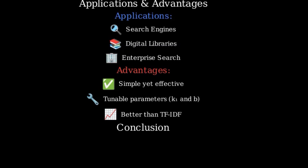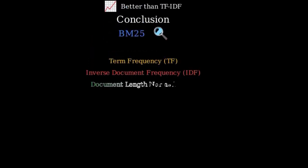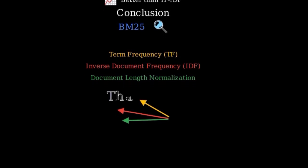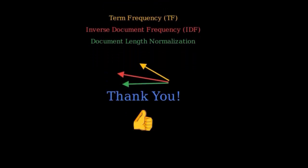In conclusion, BM25 is a powerful ranking function that builds on the foundations of TF-IDF, incorporating term frequency, inverse document frequency, and document length normalization. It remains a standard benchmark in information retrieval and continues to be widely used in search systems despite the emergence of newer machine learning-based approaches.